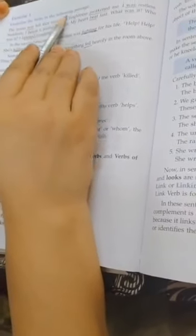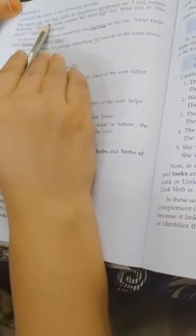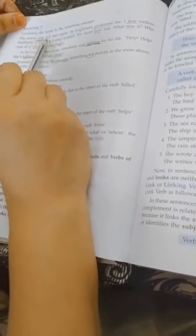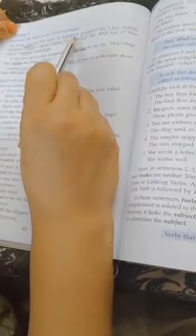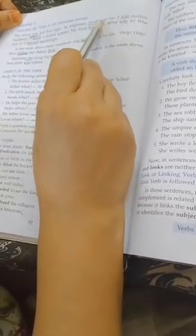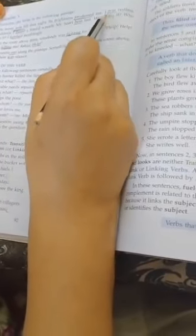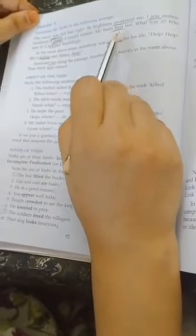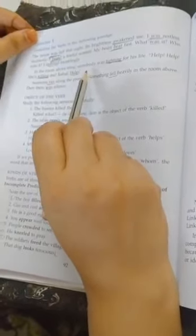Now Exercise 1: Underline the verb in the following passage. 'The moon was full that night...' In this way you will complete Exercise 1.